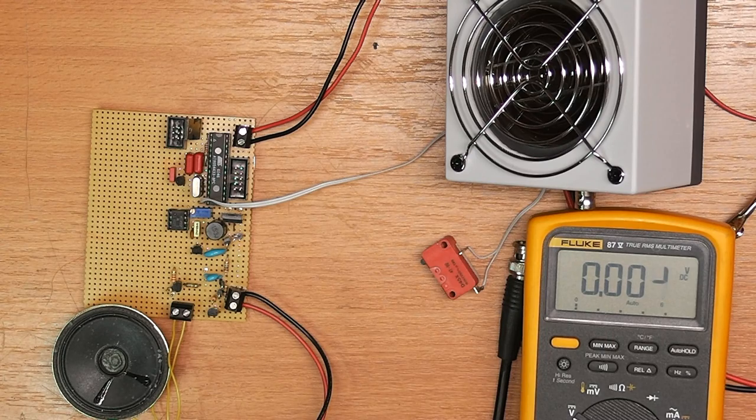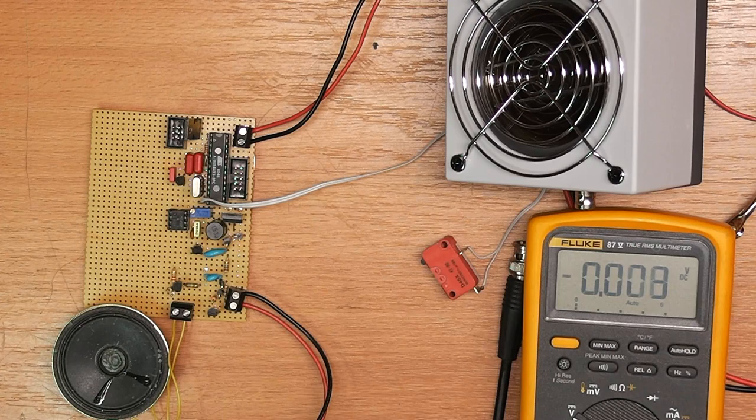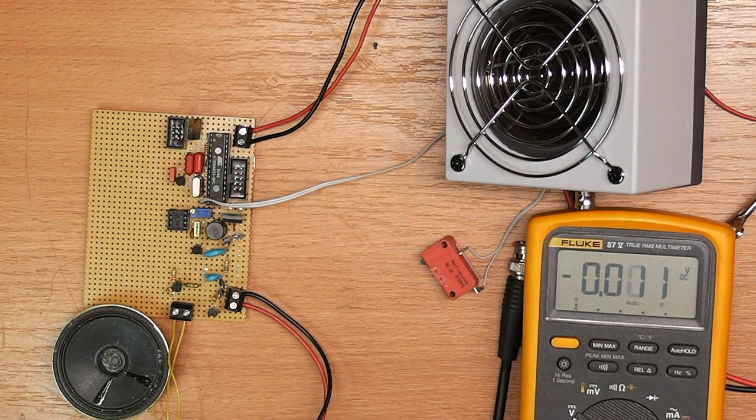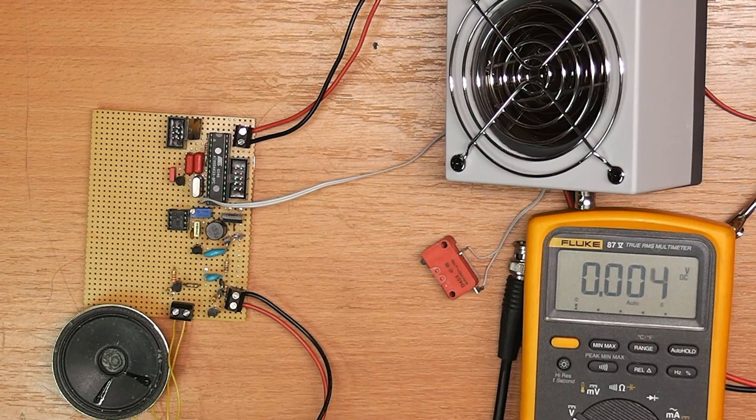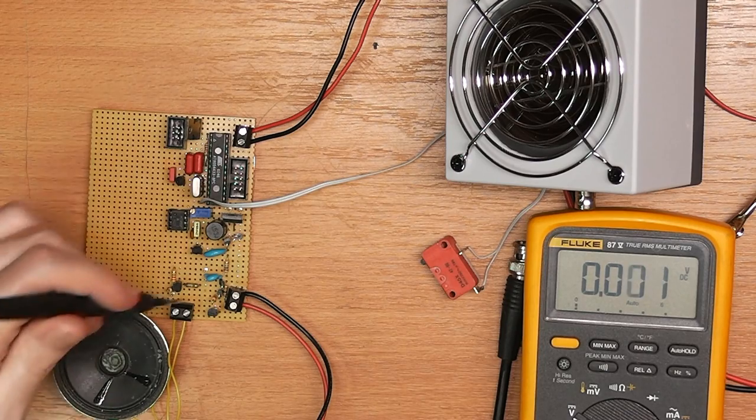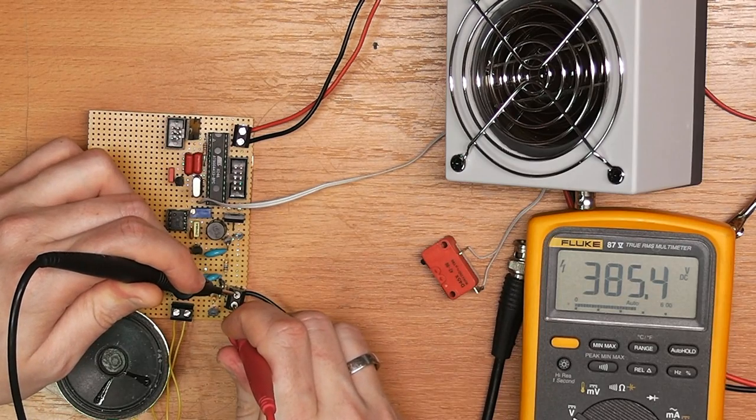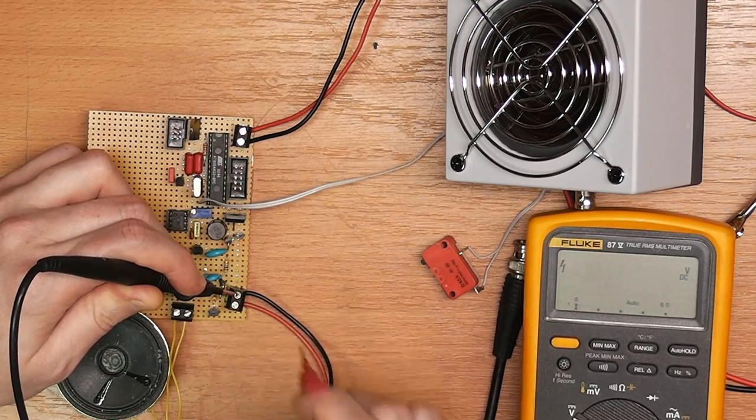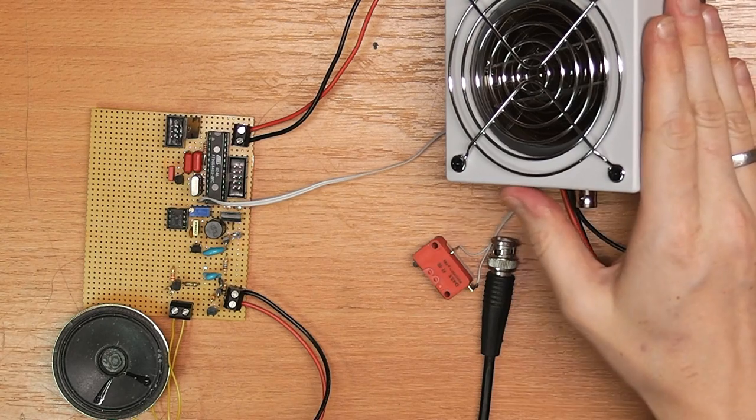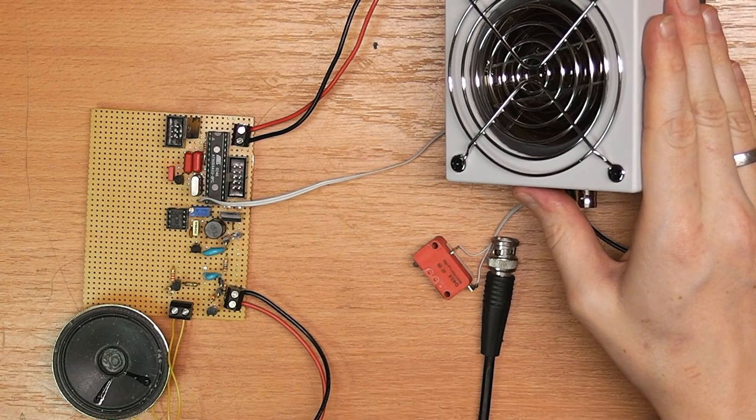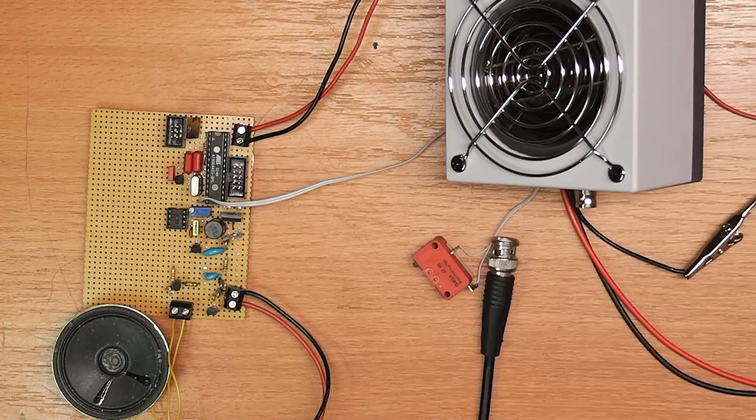So now I've connected it to an 8 volt source and not yet connected the probe itself just to show you that it outputs about 400 volts. Anything between 360 and 440 volts is okay for this probe. Measures about 385 volts. So now I'll hook up the probe itself and use some thorium welding electrodes to show you that it actually works.